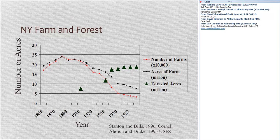Post-European settlement, land was cleared for agriculture back in the 1600s and 1700s. By the middle 1800s, much of the land in New York and the Northeast had been cleared. New York has about 30 million acres. By the peak of agriculture in 1880, forest had been cleared from all but about 6 million acres of New York, so the majority of New York was an agricultural state.